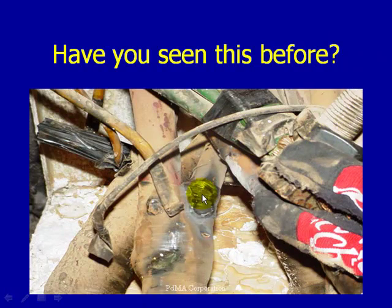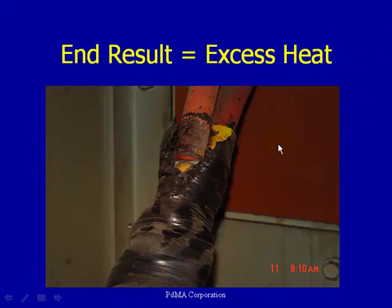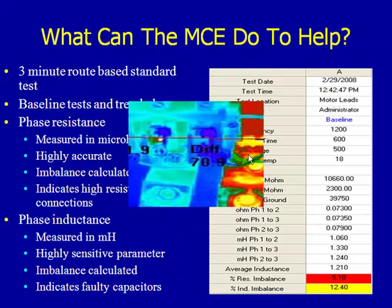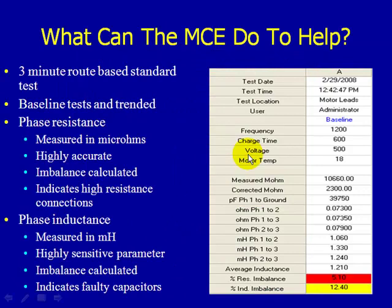Poor connections create excess heat. We can see evidence of excess heat in multiple images, and through a thermographic image we can clearly see the difference — one phase is running much higher in temperature than the other two phases, which is a clear indicator of a problem in the power circuit.